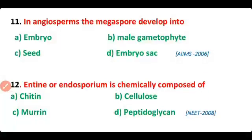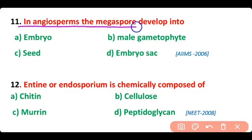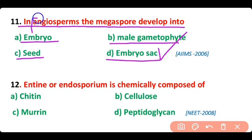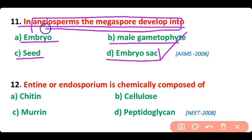Question 11. In angiosperms, the megaspore develops into: embryo, male gametophyte, seed, or embryo sac? The correct answer is option D. In angiosperms, the megaspore develops into the embryo sac.